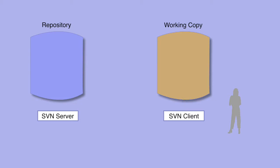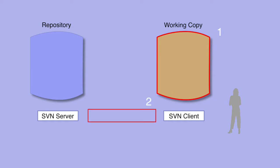There are three main areas of security we need to attend to: 1. The working copy. 2. Data moving across the network between the client and the server. 3. The server.